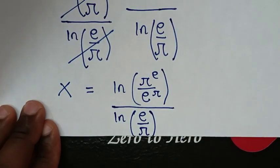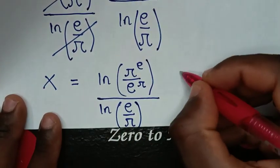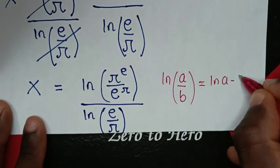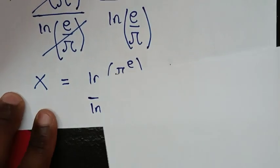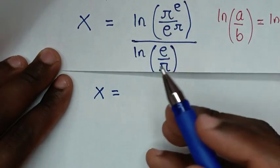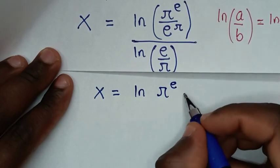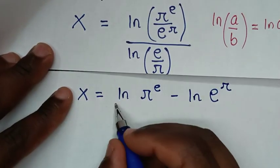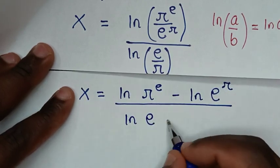We now apply the logarithm quotient rule: ln(a/b) = ln(a) − ln(b). So the numerator becomes ln(π^e) − ln(e^π), and the denominator becomes ln(e) − ln(π).